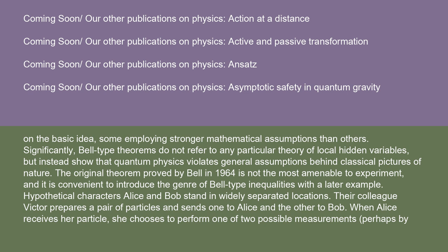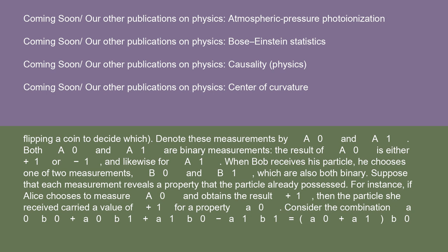The original theorem proved by Bell in 1964 is not the most amenable to experiment, and it is convenient to introduce the genre of Bell-type inequalities with a later example. Hypothetical characters Alice and Bob stand in widely separated locations. Their colleague Victor prepares a pair of particles and sends one to Alice and the other to Bob. When Alice receives her particle, she chooses to perform one of two possible measurements, perhaps by flipping a coin to decide which. Denote these measurements by A0 and A1; both are binary measurements, with results of either plus 1 or minus 1.